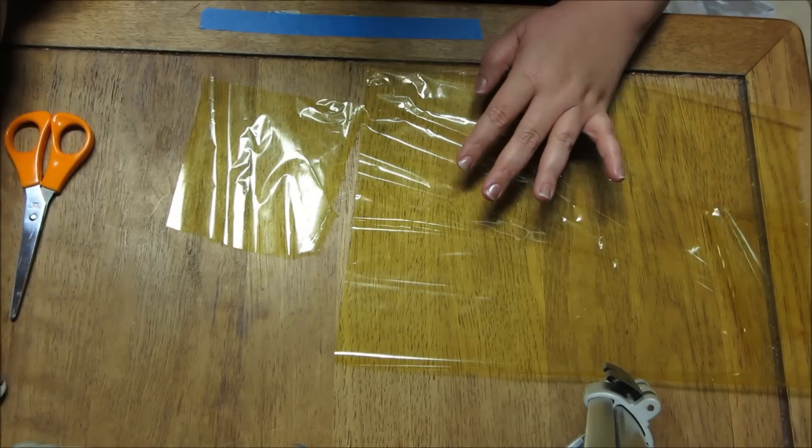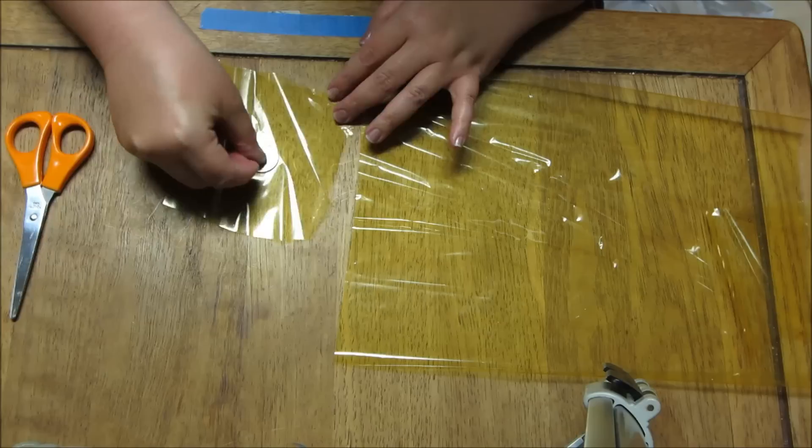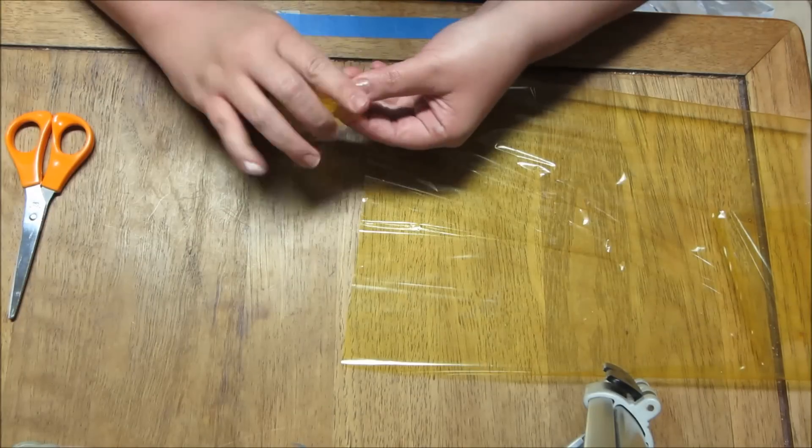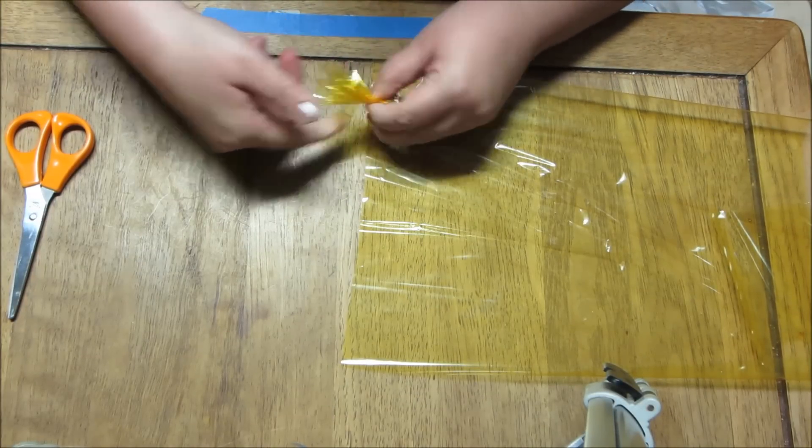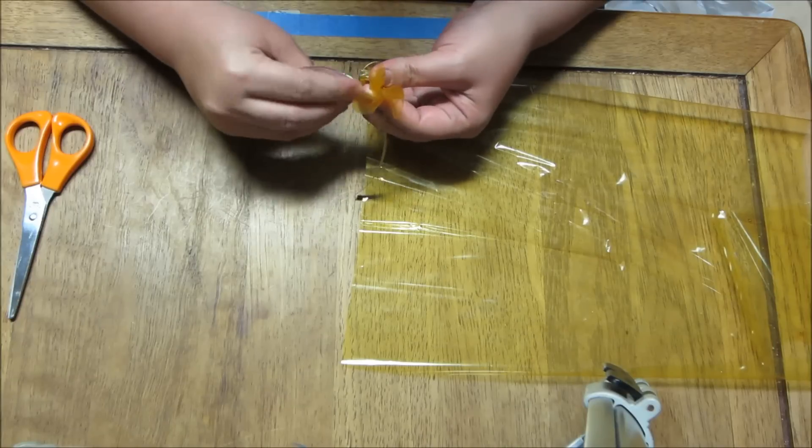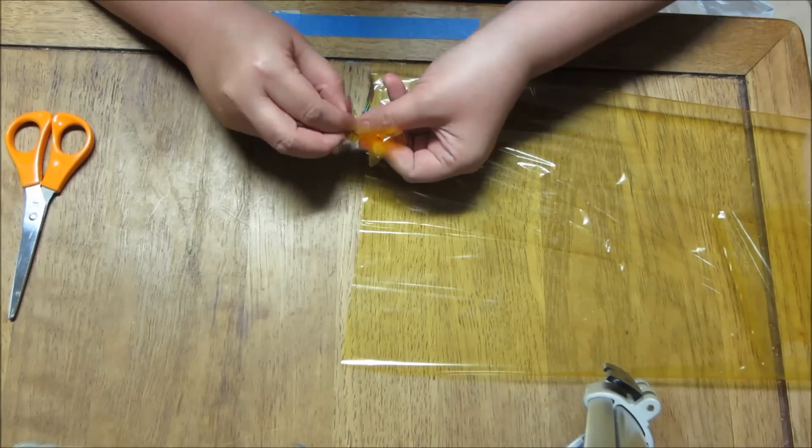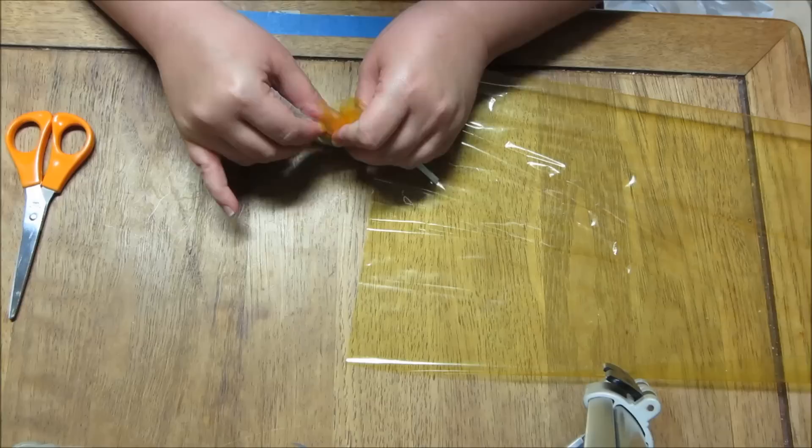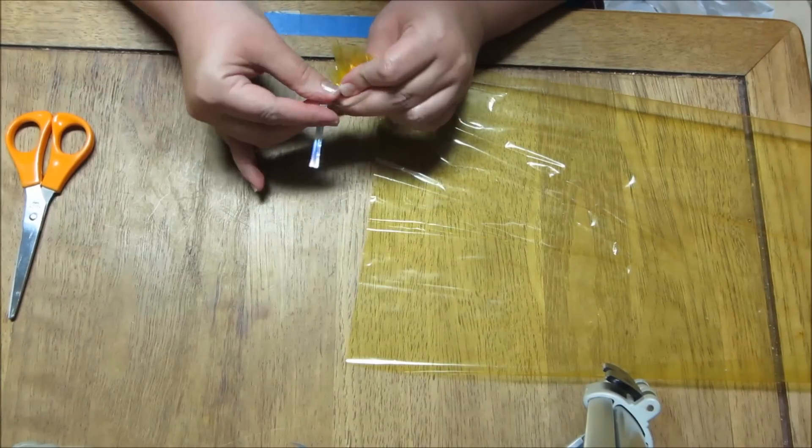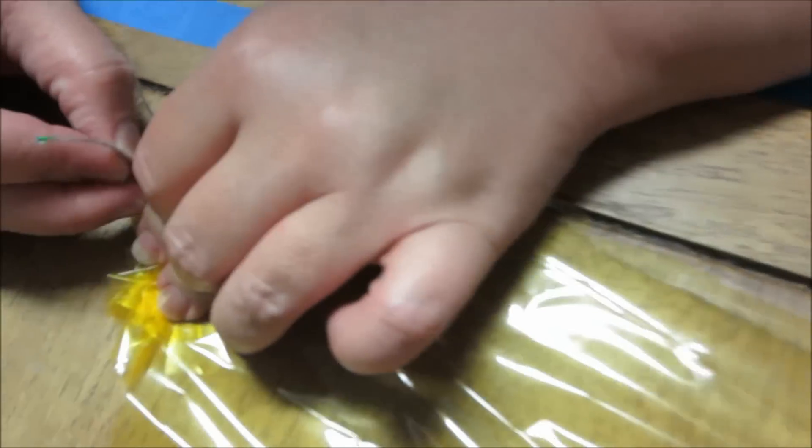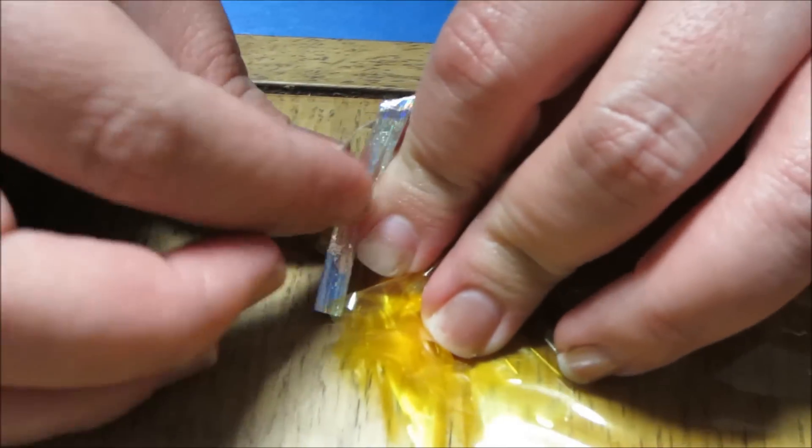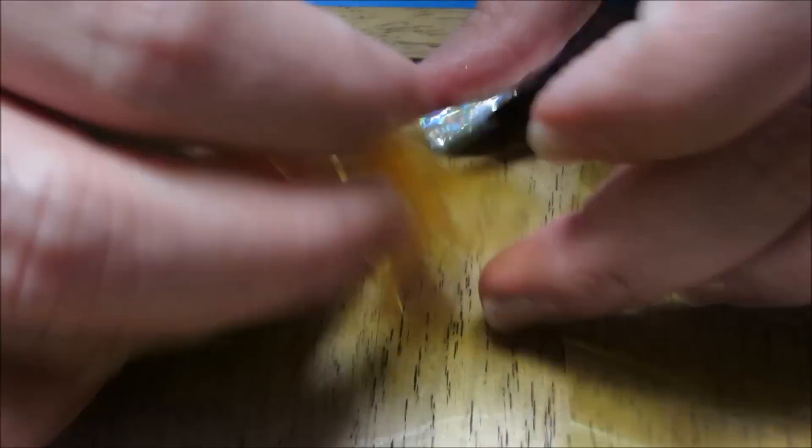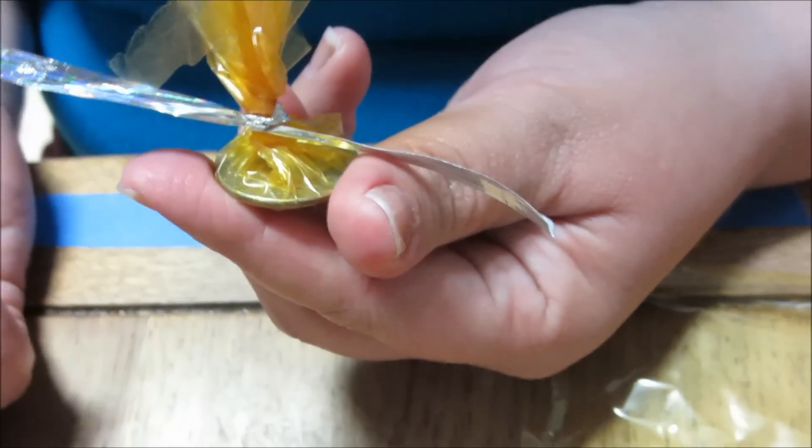We're going to take a coin—in this case we're using a quarter—and you just basically wrap it up and twist it. Then you use a ribbon to make sure it's tight and sealed, and tie a knot around it. Now just make it upright and we have a nice sealed coin.